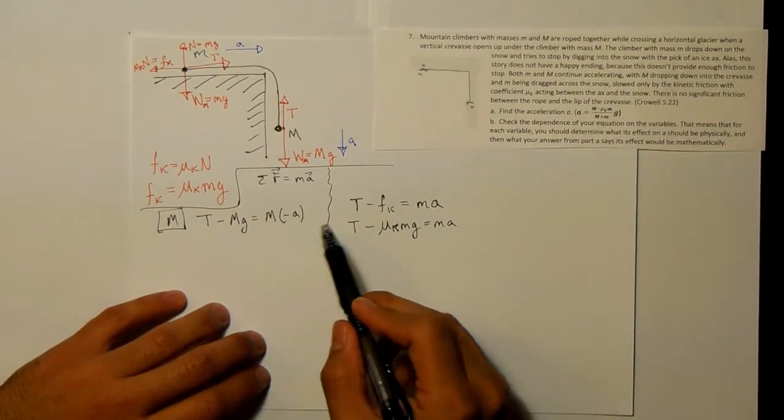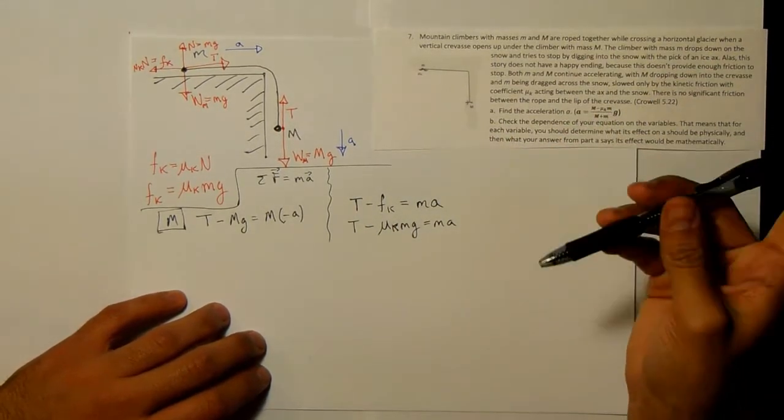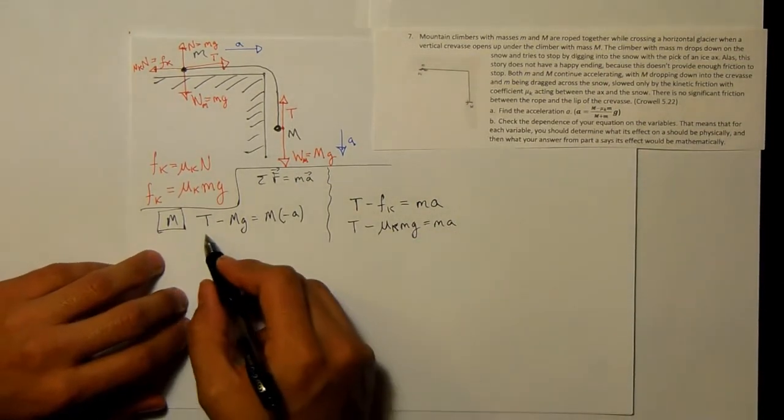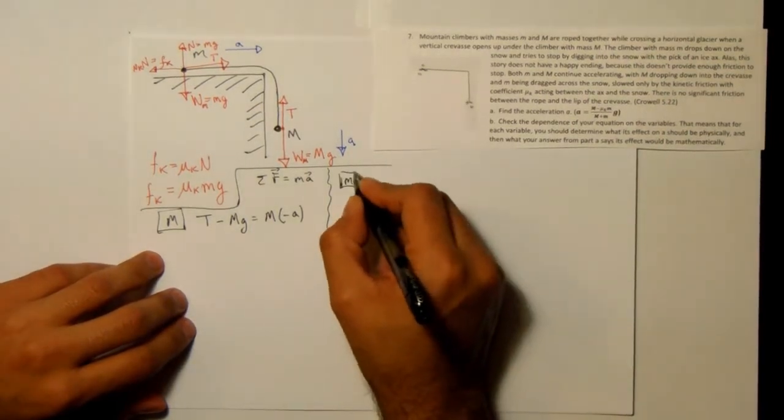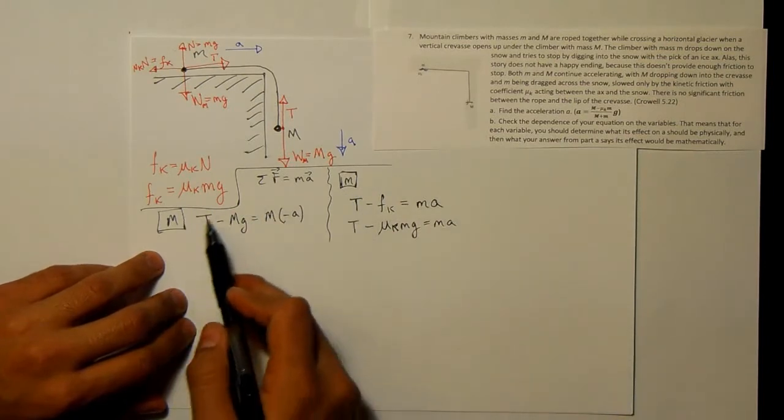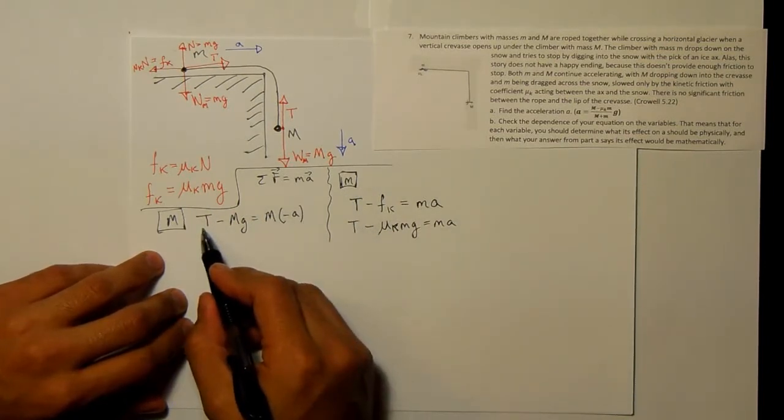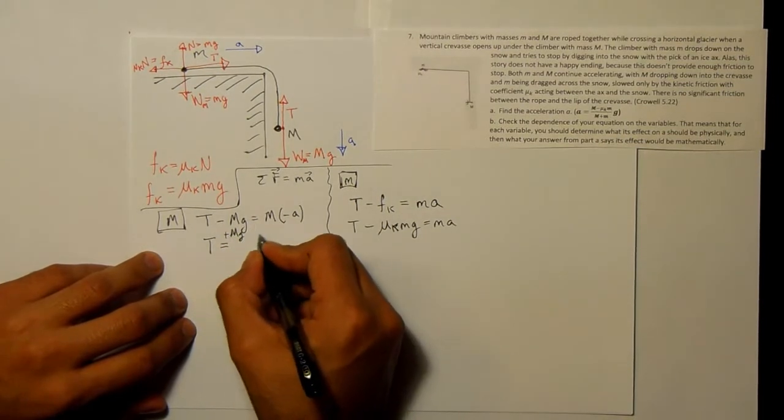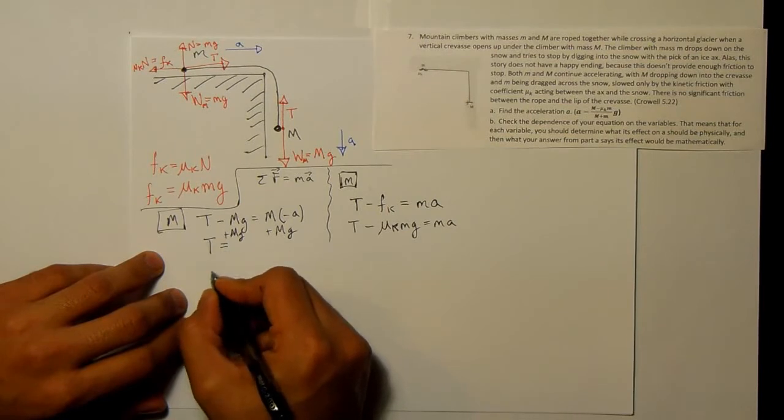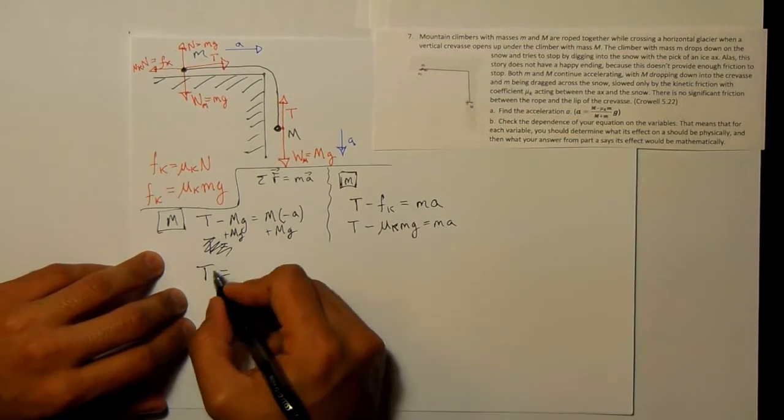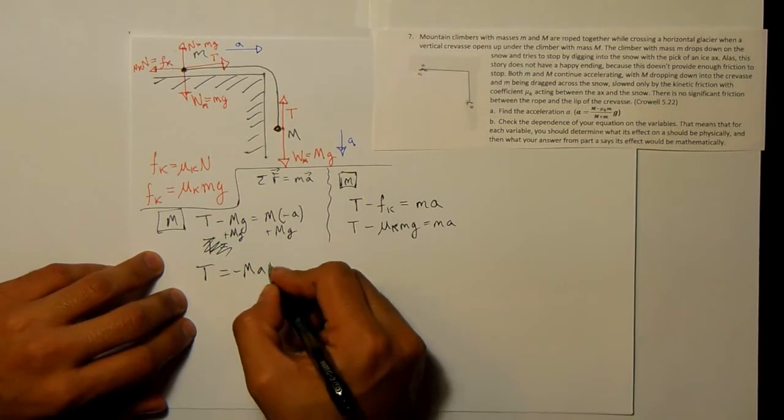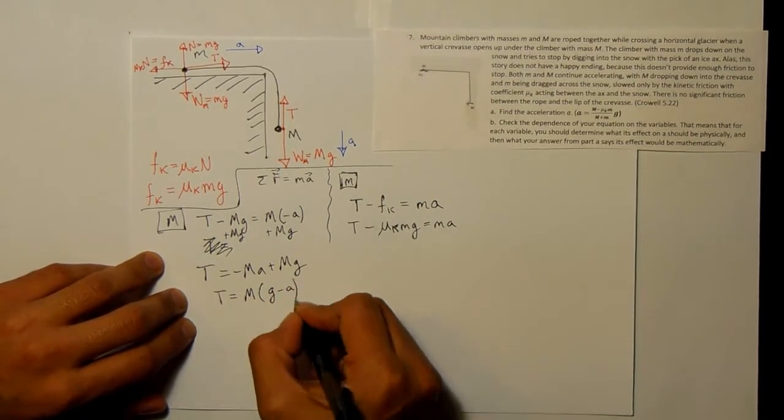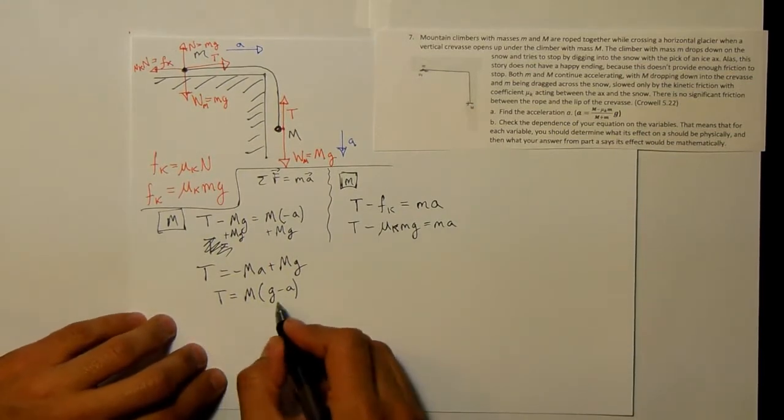So we're looking for a and we assume that we know everything here, that we know g, that we know the little m, we know the big M, that we know mu sub k. We don't know T, right? It's not given to us in the problem. So it would be nice if we can have a solution where that cancels out. So what we can do is we can take this one and I'm going to write little m, this is to clarify that this is an equation for little m, this is an equation for big M. Okay, so I want to substitute an expression for T into one of these, so I'll solve for T over here. And I can get that by adding capital Mg to both sides.